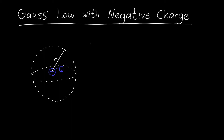In this video we're going to do an example of Gauss's law with negative charge instead of positive charge. So let's say I have a point charge of charge minus Q at the origin, and I want to find the electric field at some distance R away from that point charge.